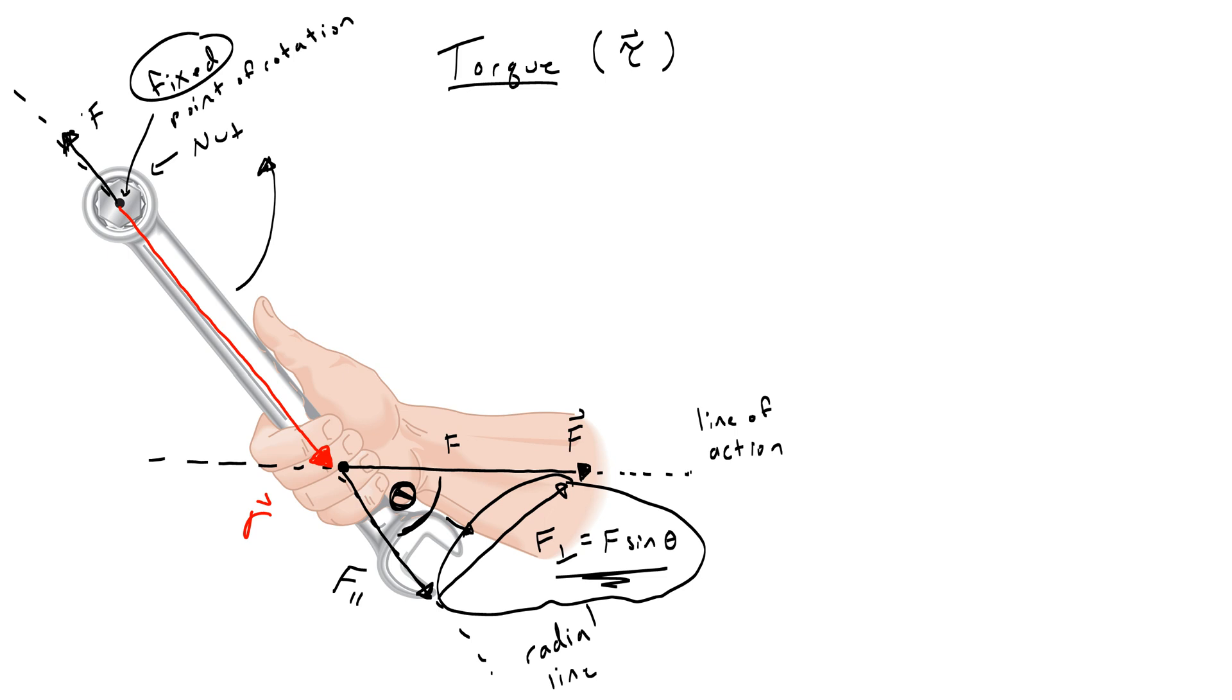That component of force multiplied by the amount of the radial position is our torque. For most problems, we'll find that F perpendicular is F sine theta, and this is our general equation for most torque problems. Later, we'll talk about how torque as a vector is really the cross product of radius and force, which almost always gives us this same equation. But for now, let's just go ahead and not talk about that.